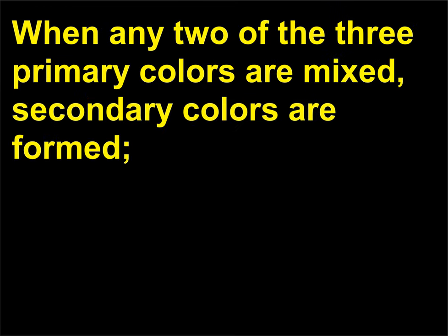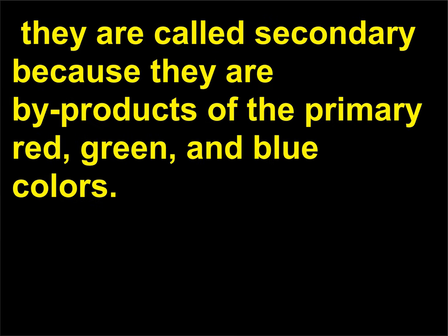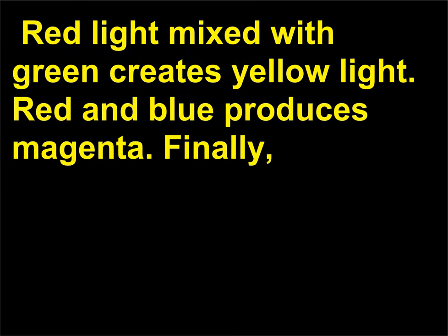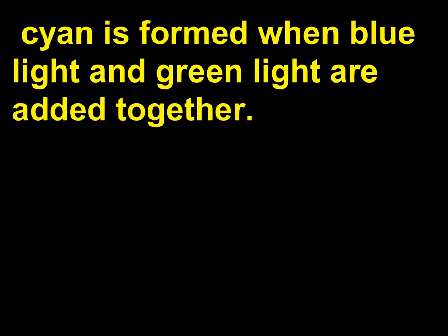When any two of the three primary colors are mixed, secondary colors are formed. They are called secondary because they are byproducts of the primary colors: red, green, and blue. Red light mixed with green creates yellow light, red and blue produces magenta, and cyan is formed when blue light and green light are added together.